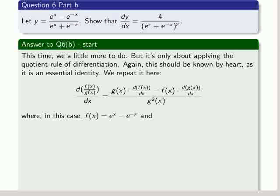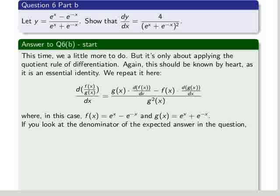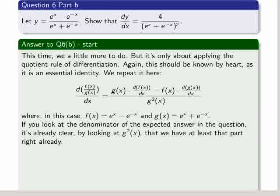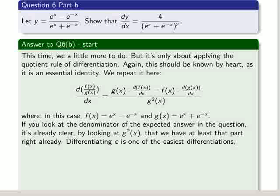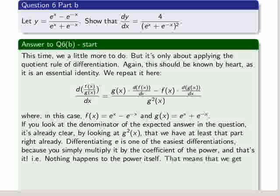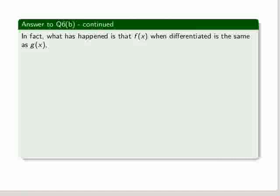In this case, we have our numerator f of x and our denominator g of x. If you look at the denominator of the expected answer, which is in the question, it's already clear by looking at what we've just said g of x is and squaring it that we have at least that part right already. Differentiating e is one of the easiest differentiations because you simply multiply it by the coefficient of the power, and that's it. In other words, nothing happens to the power itself.